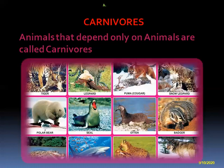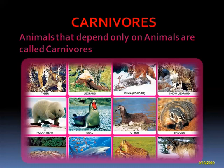Our next one is carnivores. Animals that depend only on other animals for their food are called carnivore animals. See the picture: tiger, leopard, puma, snow leopard, polar bear, seal — all are carnivores.